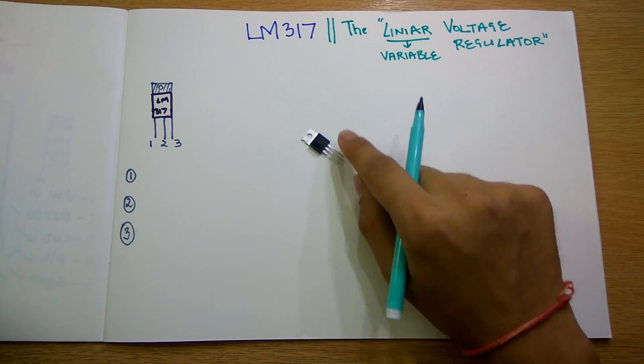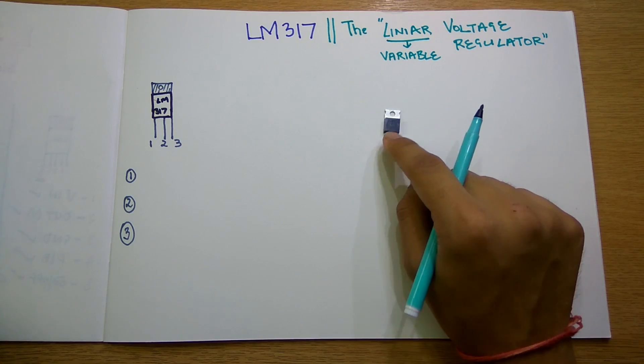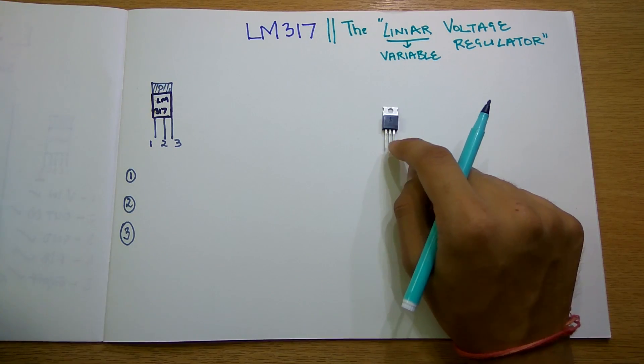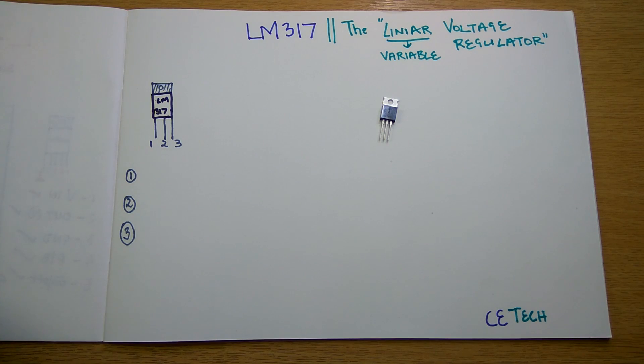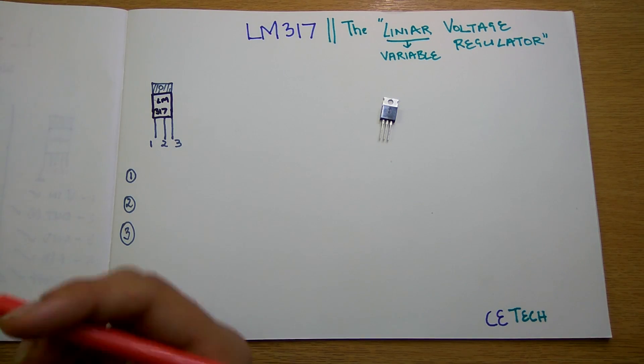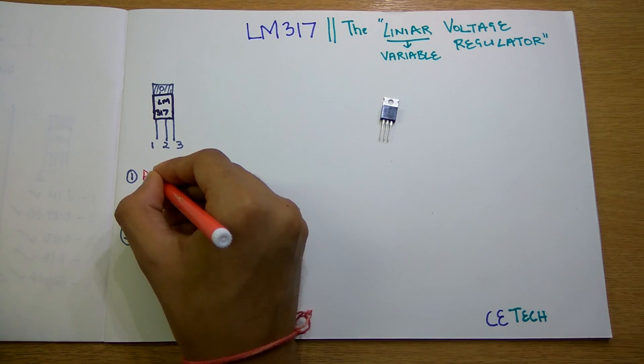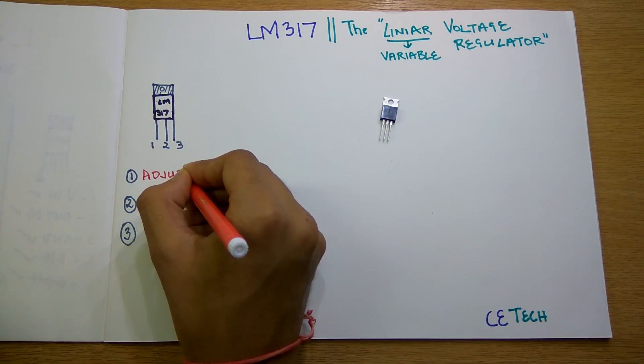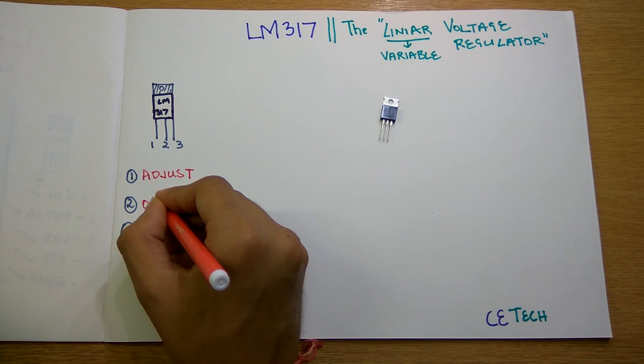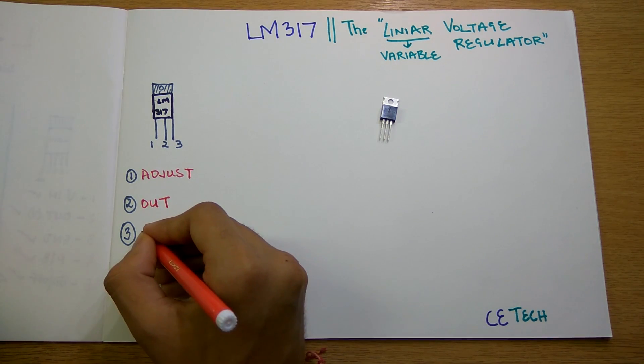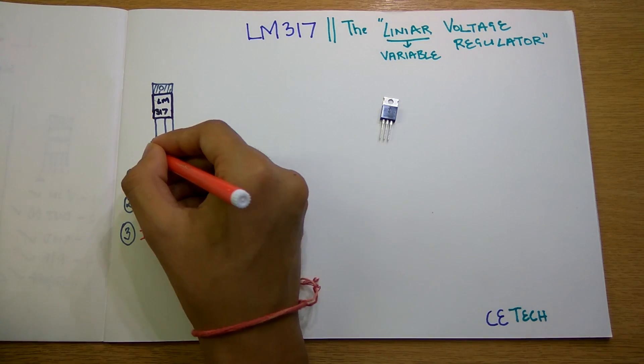Firstly in the pin diagram, I will tell you what the pins are for. The first pin is the adjust pin, the second pin is the output pin, and the third pin is the input pin.